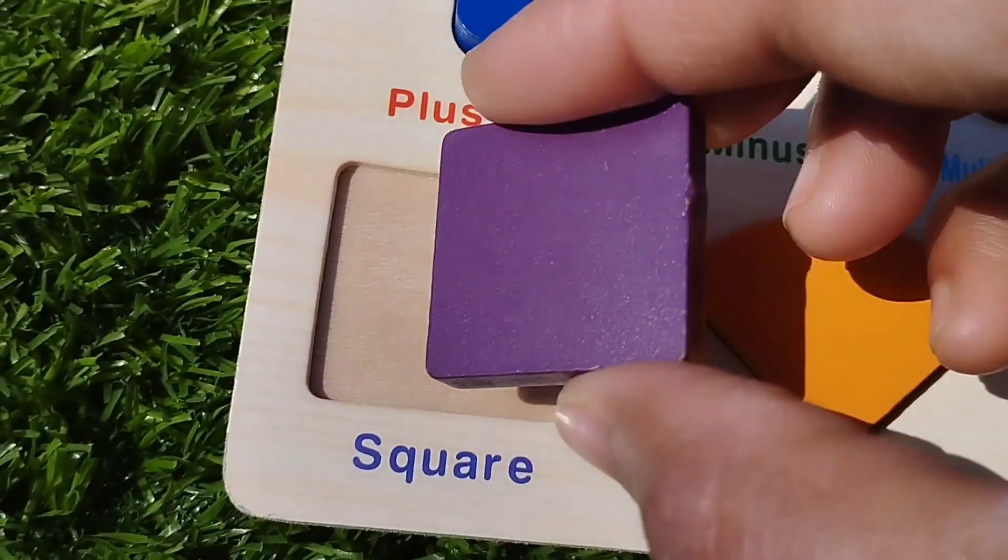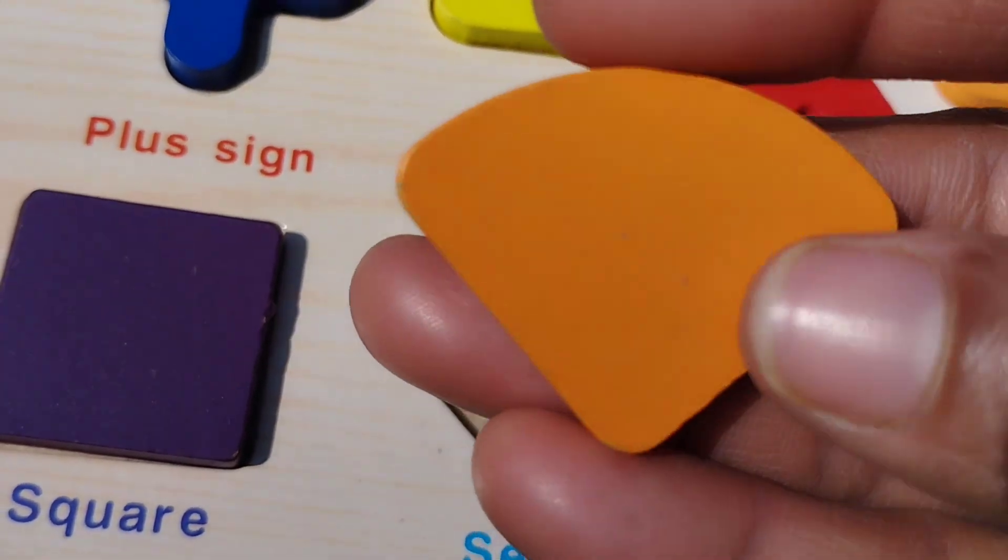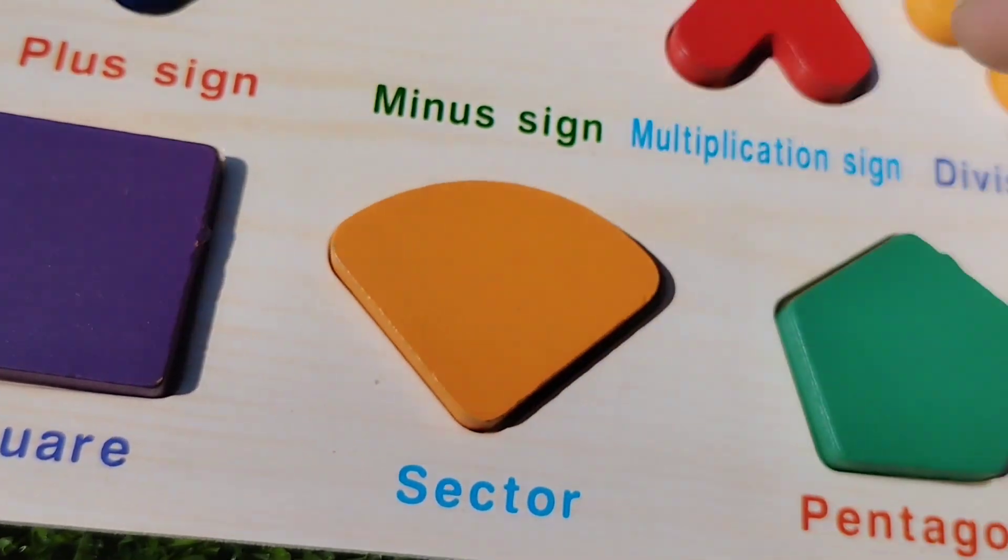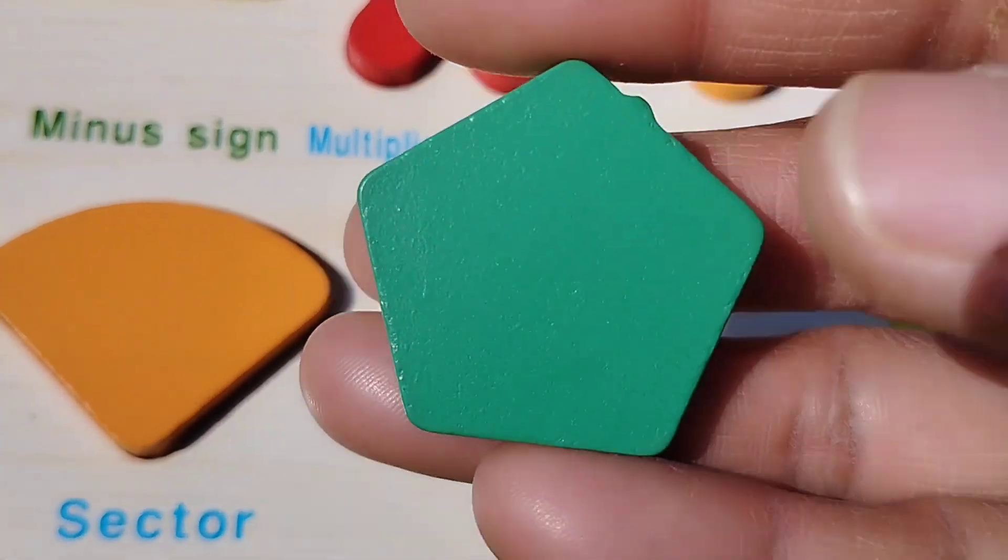Square. This is square shape. The next shape is sector. This is sector shape. Pentagon. This is pentagon shape.